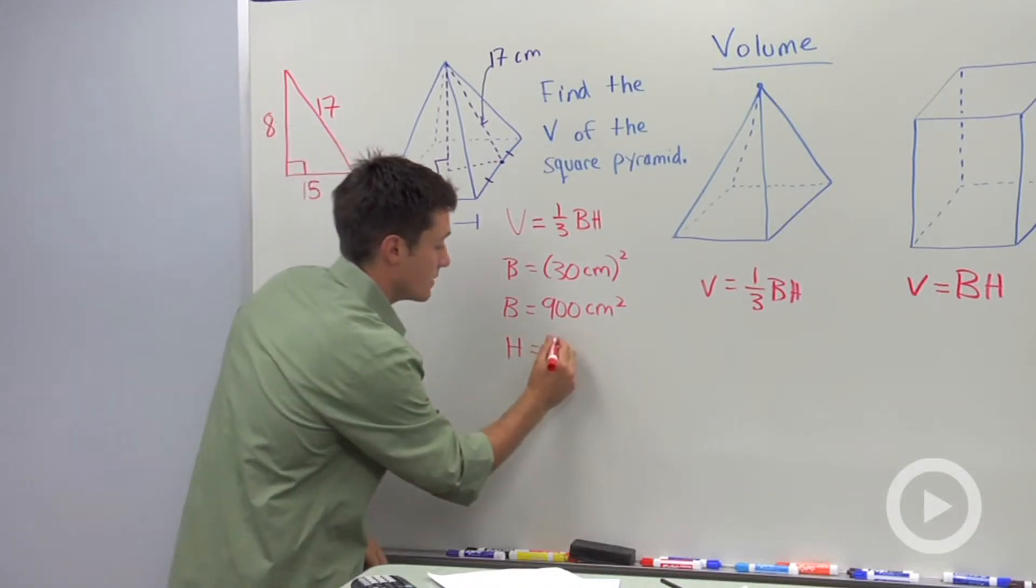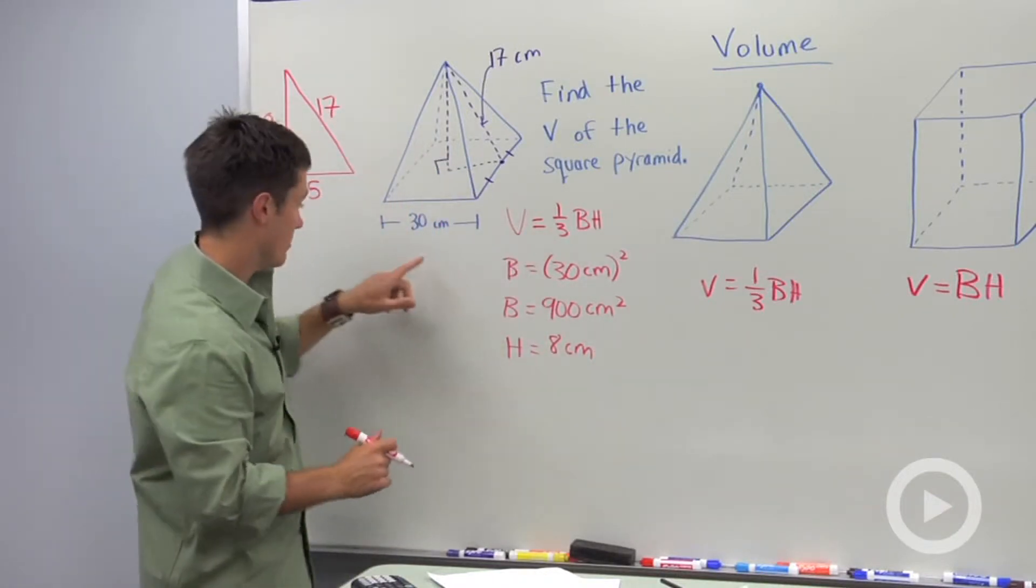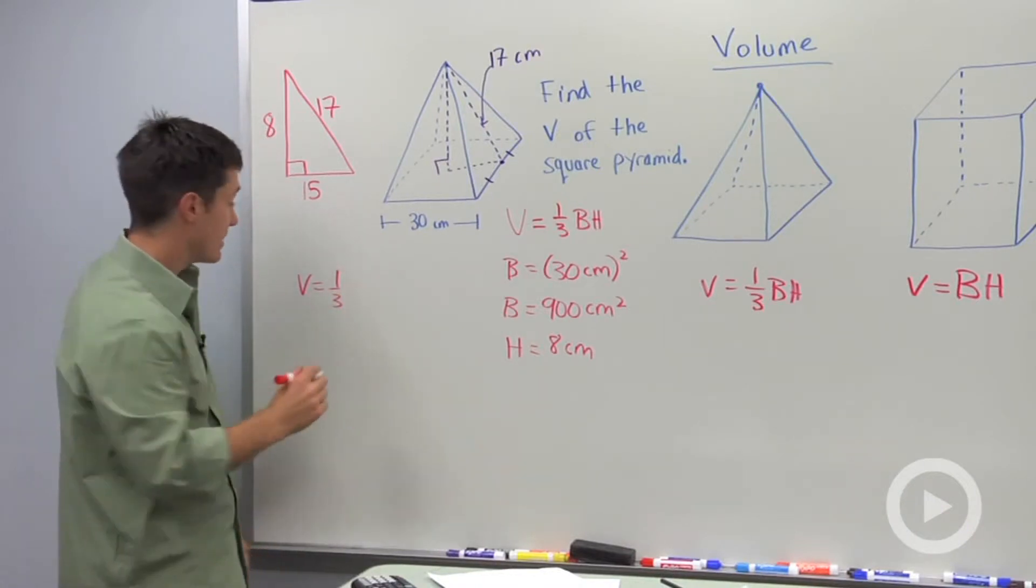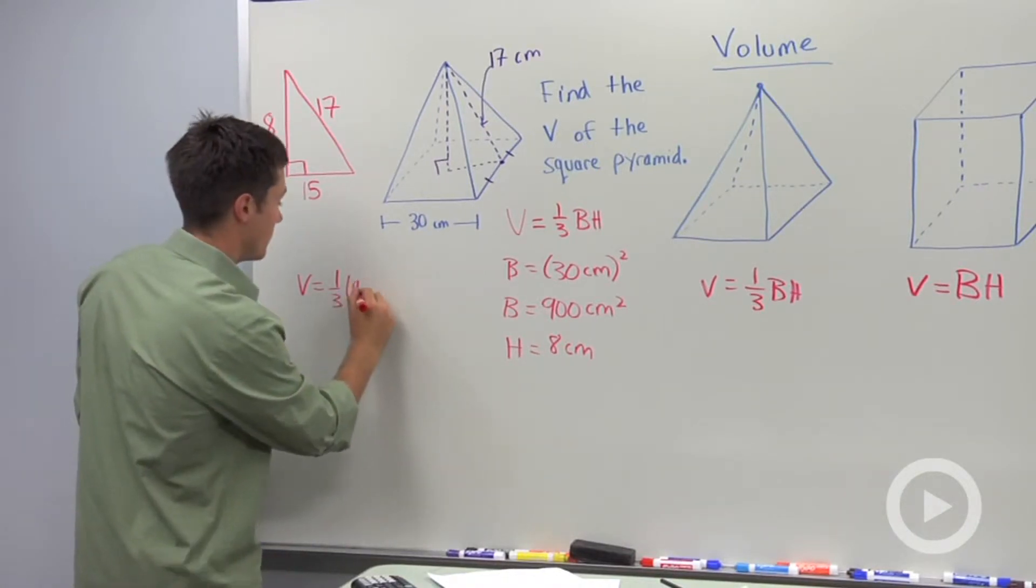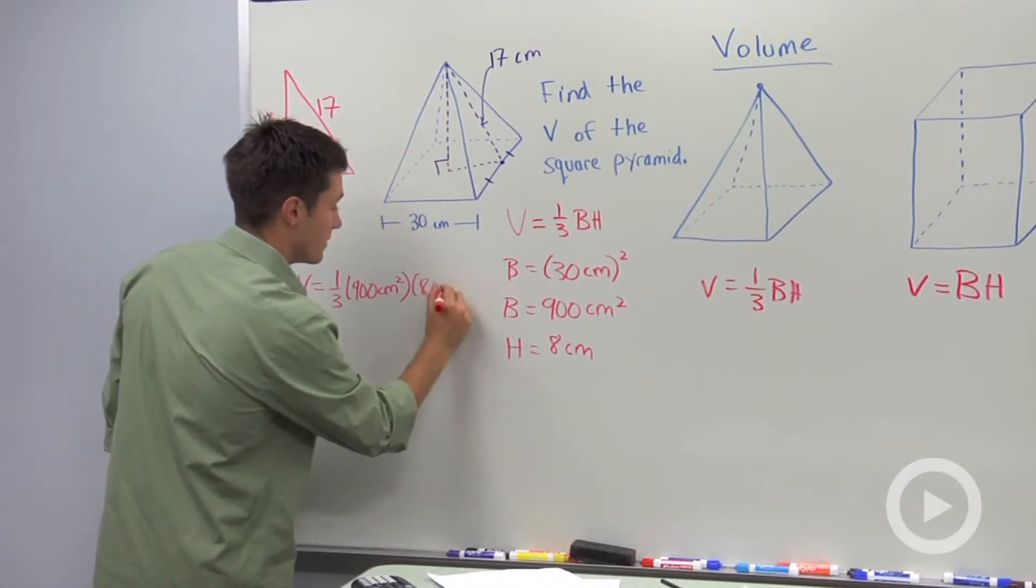So we said height is 8 centimeters. So now we just need to plug that in. I'm going to come over here. I'm going to say volume is equal to one-third our base area, which is 900 square centimeters, times our height, which is 8 centimeters.